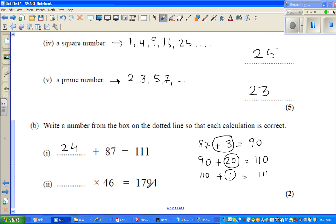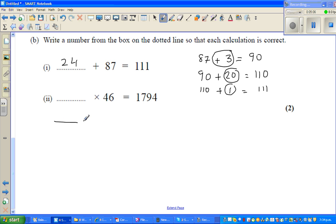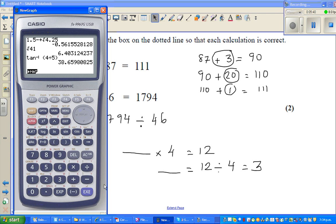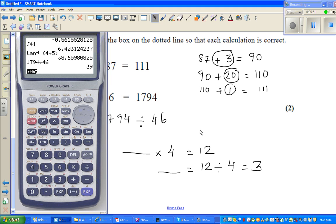What times 46 equals 1794? This number is 1794 divided by 46. If you're allowed a calculator, it'll be good to use one. I'll give you an example - what times 4 is 12? We know it's 3, but you get the answer by saying 12 divided by 4 which is 3. So get the calculator out - 1794 divided by 46 which is 39, so my answer is 39.